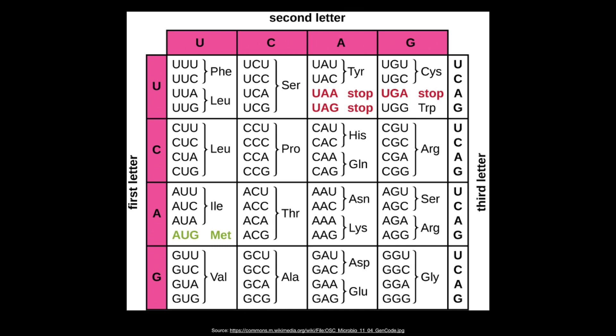For example, in this codon table you can see the codons that code for the amino acid leucine. There are an additional two codons above it, so in total there are six codons that code for leucine. AUG is the start codon and codes for the first amino acid in the chain, methionine. Lastly, some codons code for stop, meaning the end of the amino acid chain, and there are a total of three stop codons.